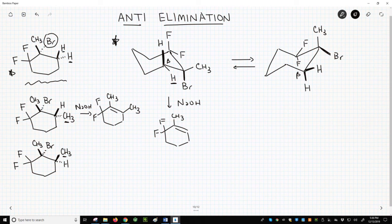If the up hydrogen, axial up, this one right here, were replaced with the methyl, then we would no longer have an anti-beta-hydrogen. So what happens?